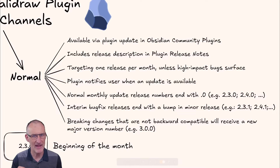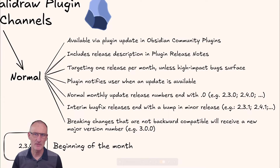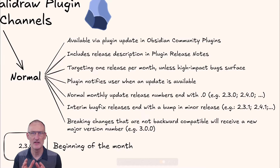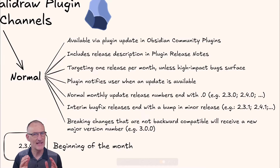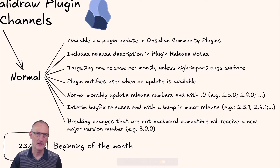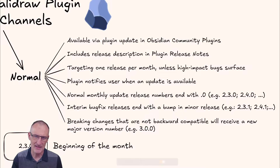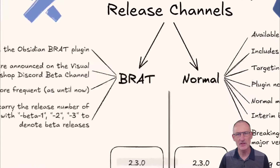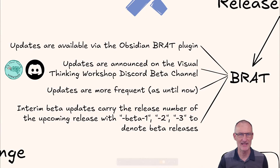If I have an interim bug fix release I will bump the minor release number, so it would be 2.3.1 or 2.4.1 for a bug fix release issued mid-month. Any breaking changes that are not backward compatible will receive a new major version number, meaning 3.0.0 is in some way not compatible with 2.3.0.